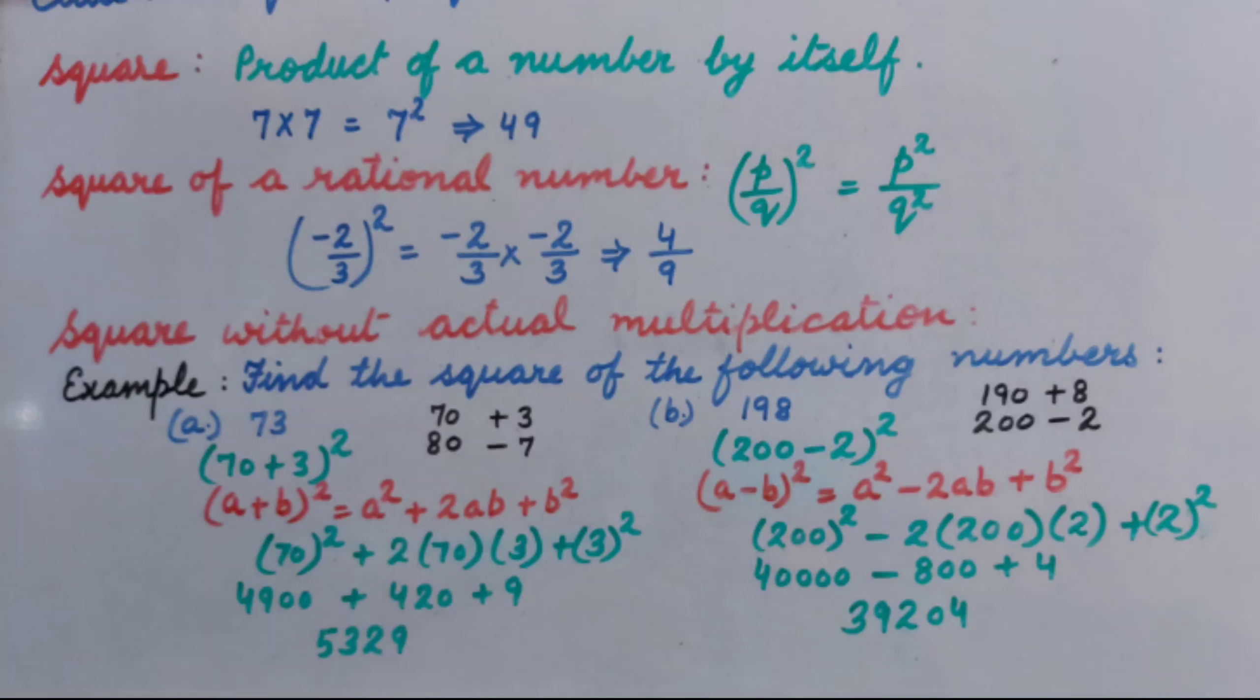For example, find the square of the following numbers. A part 73. First of all, we will think about the zero ending numbers between which the given number lie.